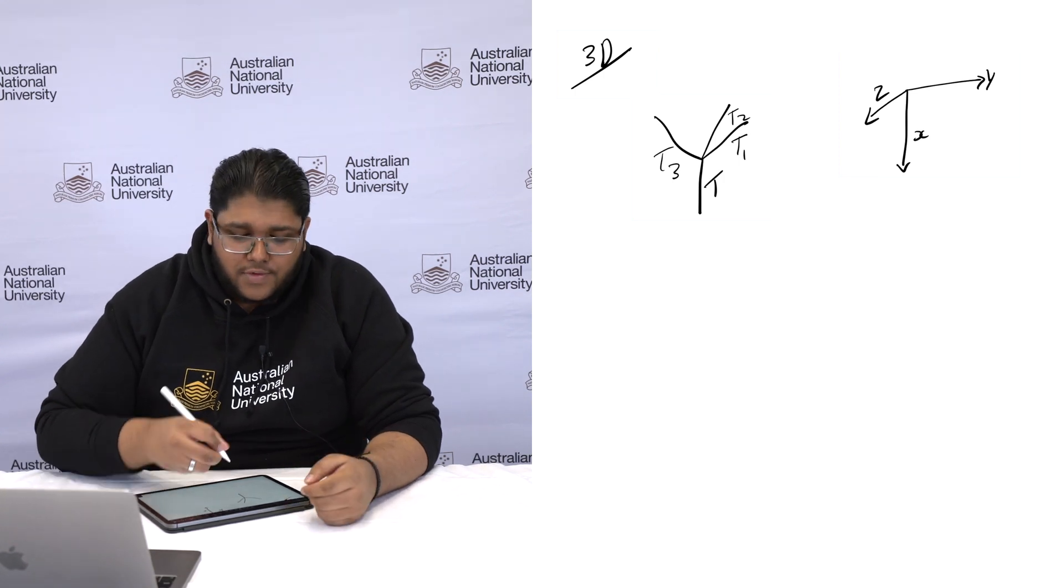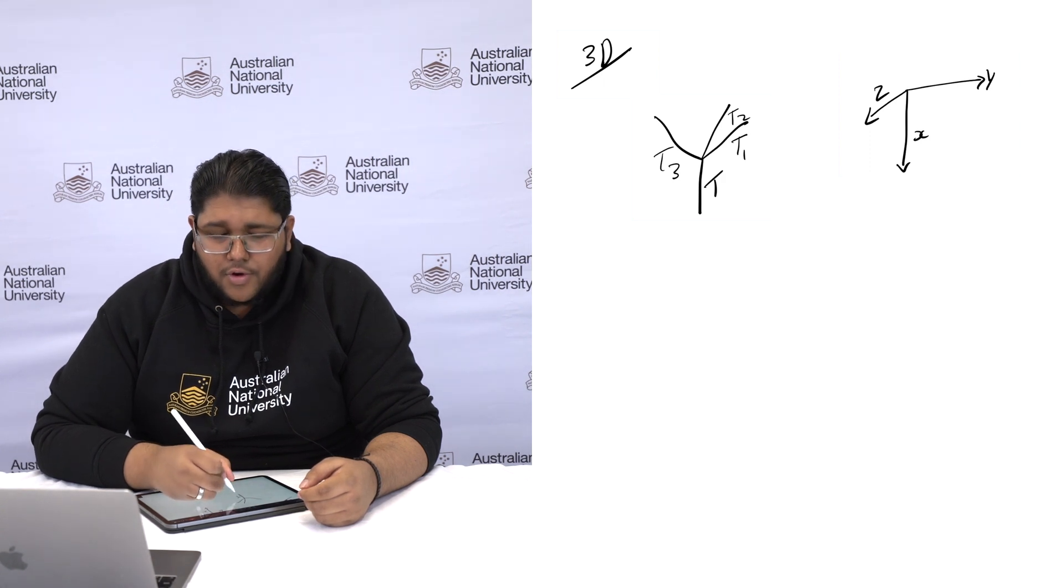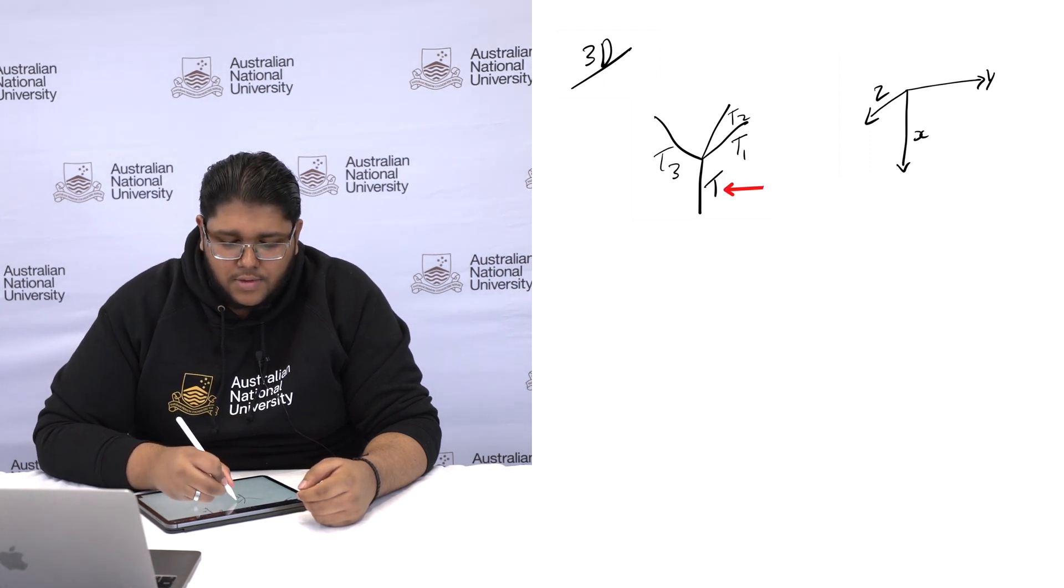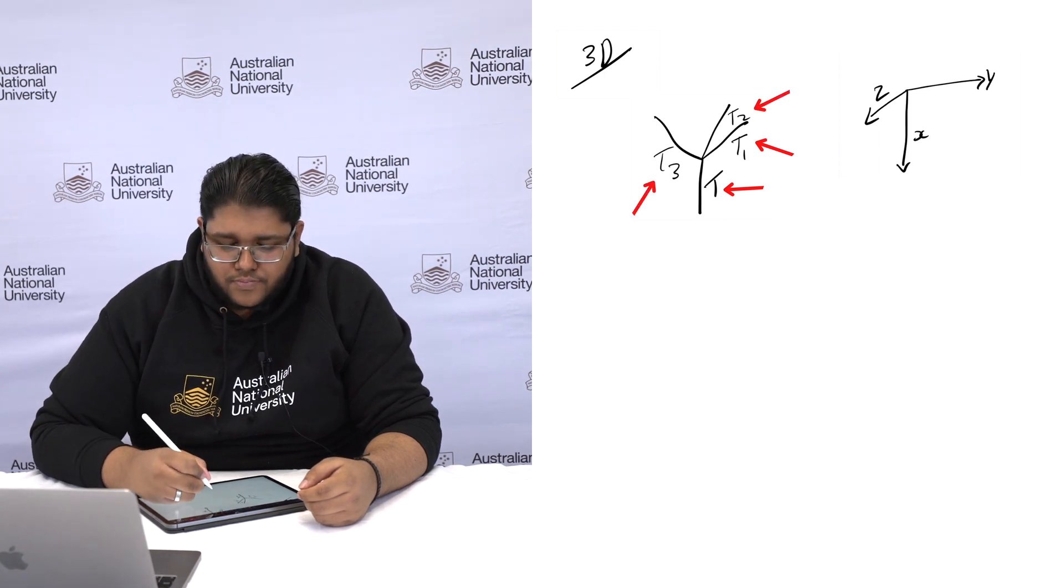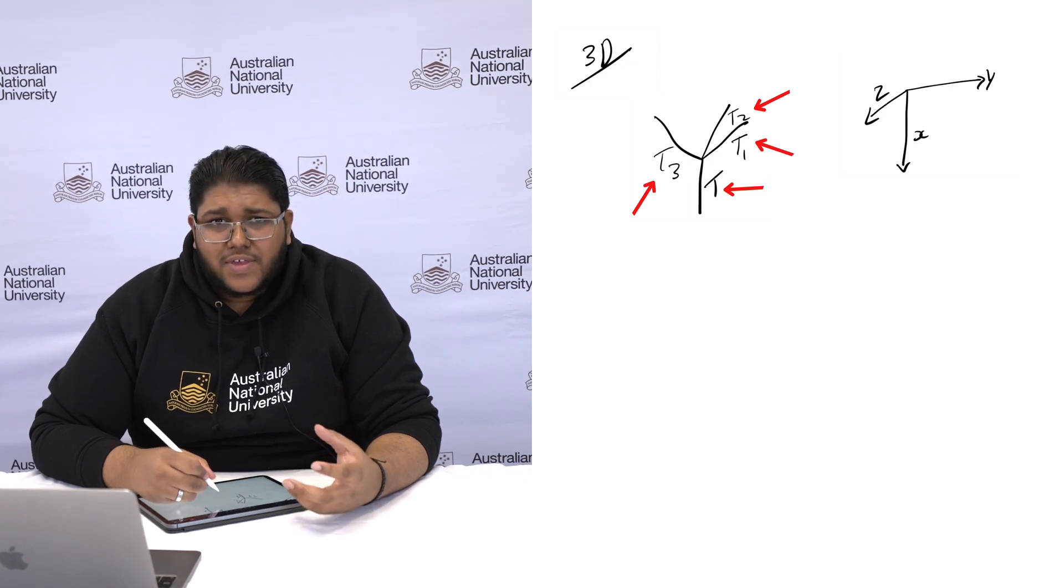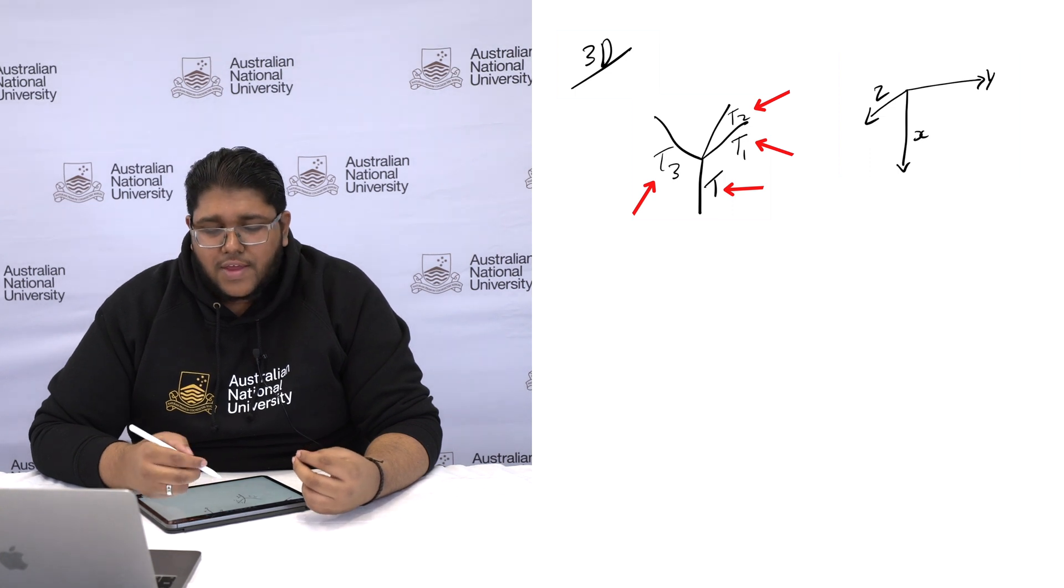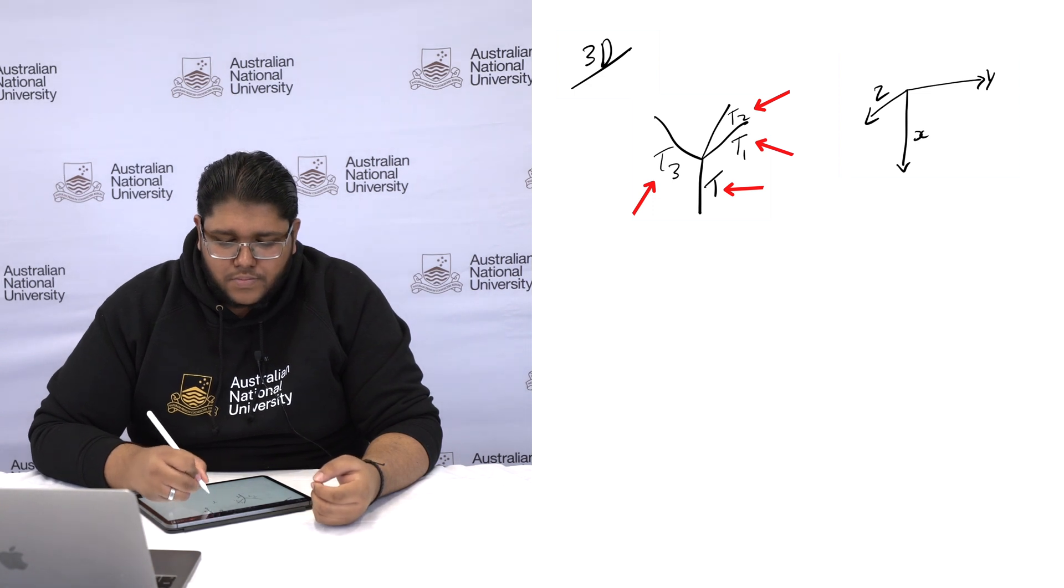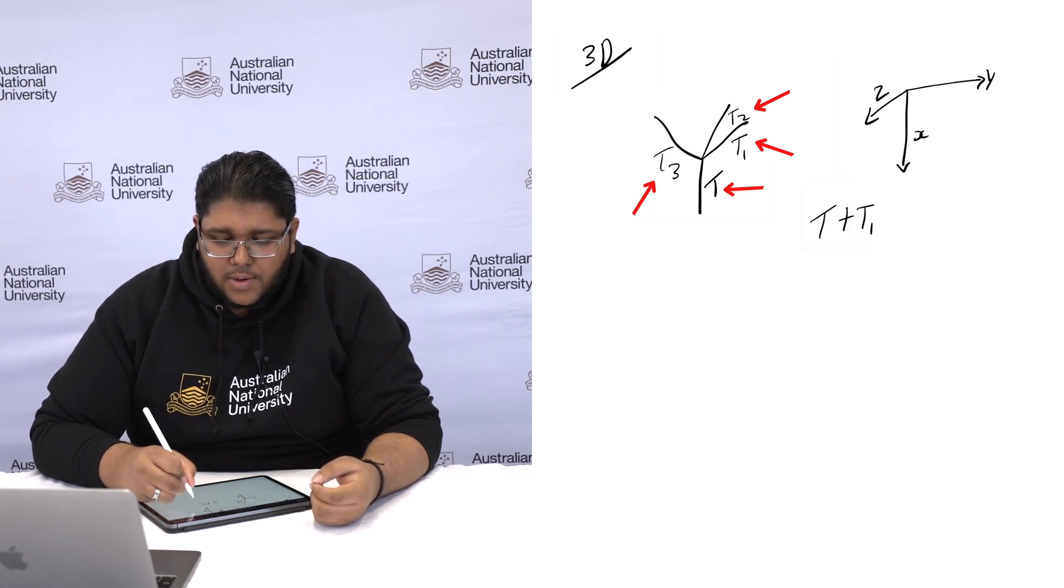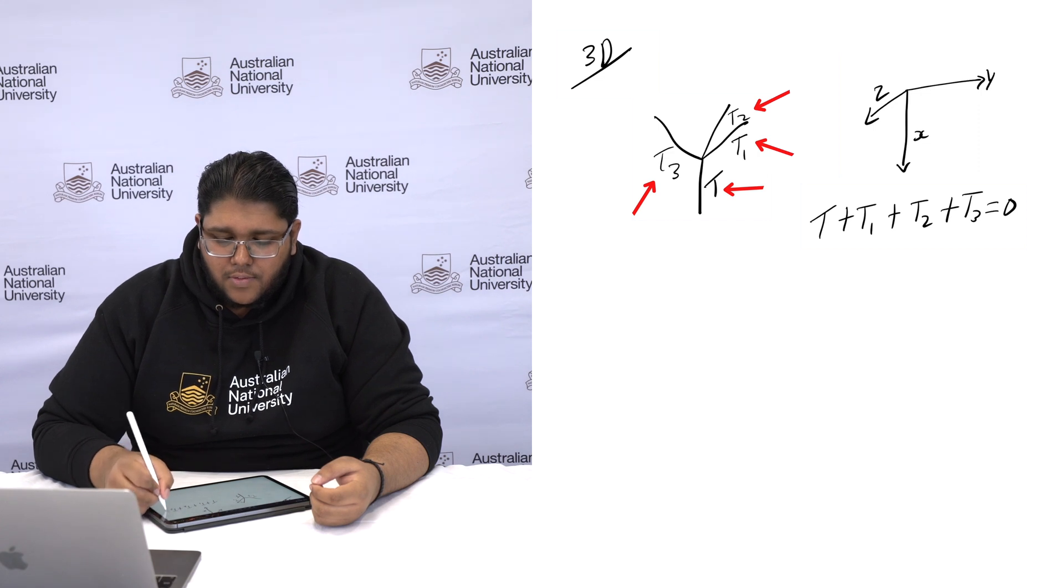First, we're going to label all the forces. So here, there'll be four forces instead of three as there were in two dimensions: T, T1, T2, and T3. From here, we can say that these forces, when added together, will equal zero. This is so that we can say it's an optimal structure, as we did before. So therefore, T plus T1 plus T2 plus T3 equals zero.